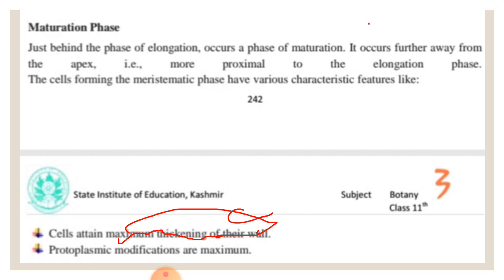In the maturation phase, the cell is mature and becomes permanent. To summarize: the three different phases of growth are — first, the meristematic phase where the cell divides; second, the elongation phase where the cell elongates; and third, the maturation phase where the cell matures.